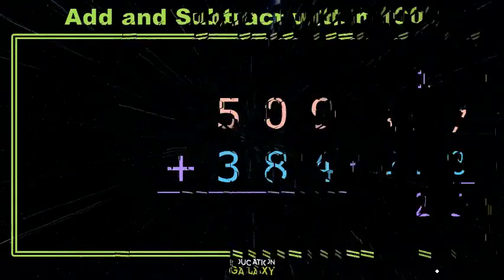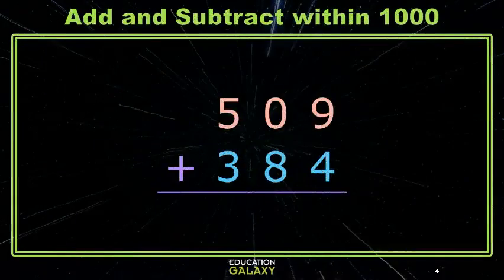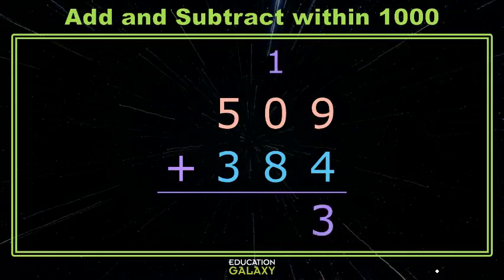Okay, let's practice one without the models. Starting in the ones place, 9 ones and 4 ones is 13 ones, but we can't write 13 in the ones place. So we give the 10 to the neighbors, and we leave the 3 ones in the ones place.